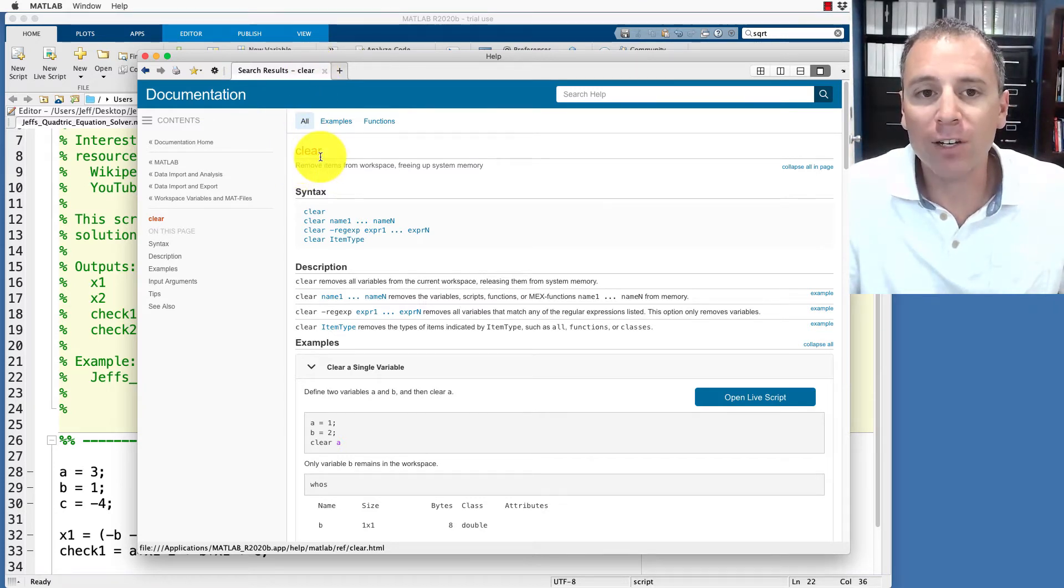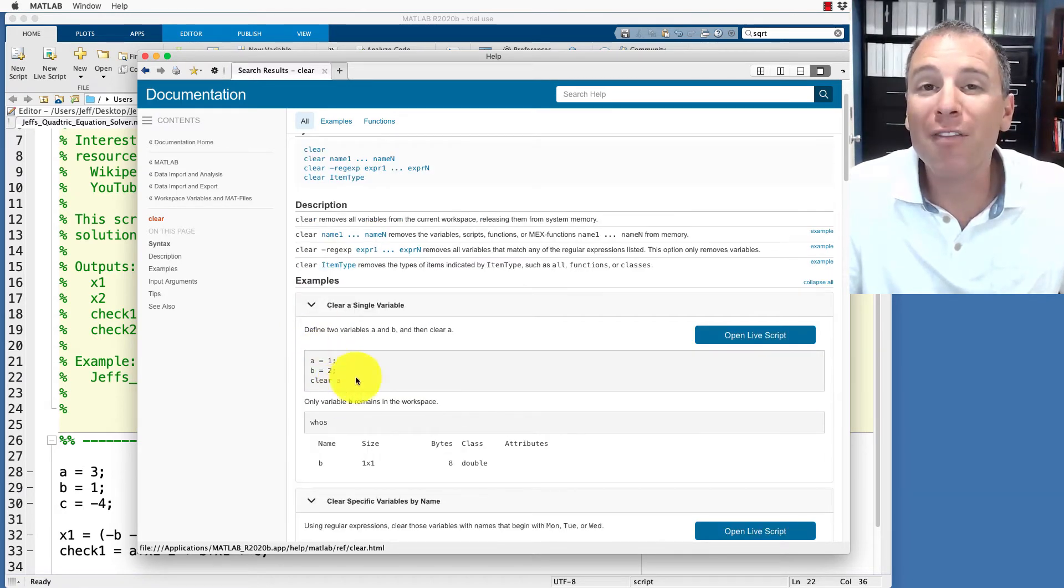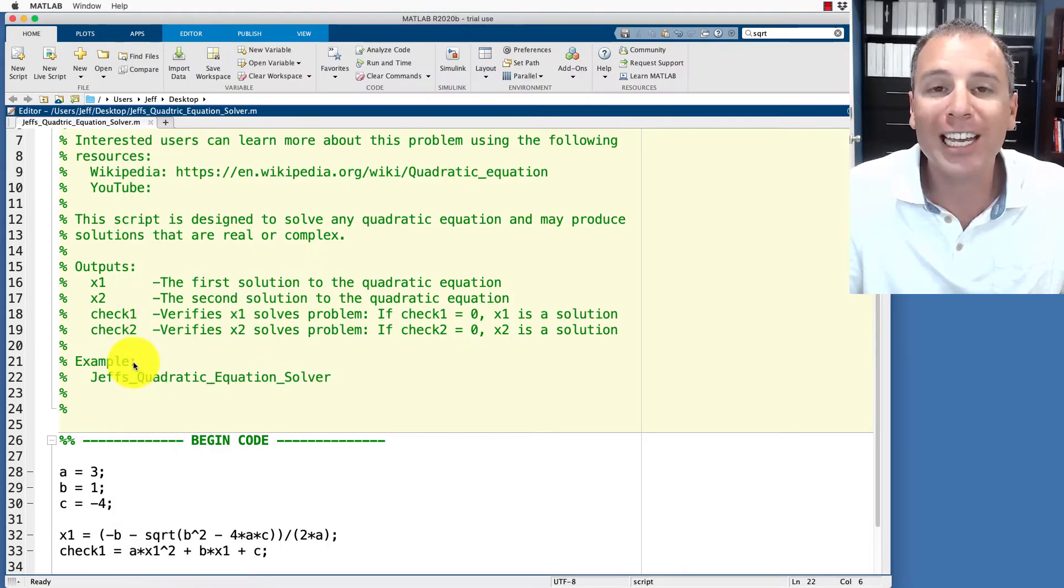Notice we have the title of the function, we have a short description, and then the syntax section. Here are a bunch of different ways or examples that we can call that function to do work for us. Each of those has an associated description and then examples of how to work that code. This is the type of example that we would put in here.